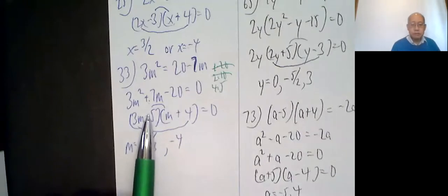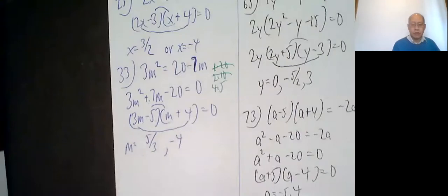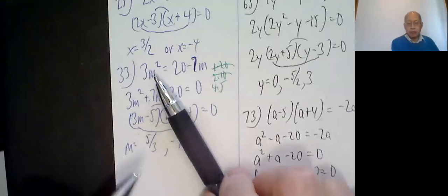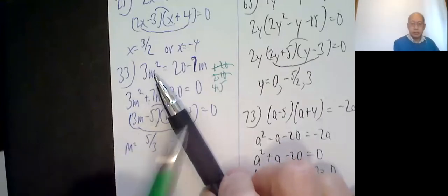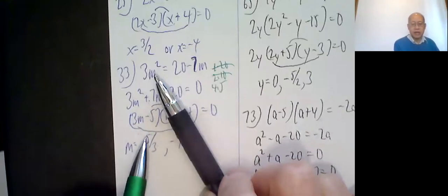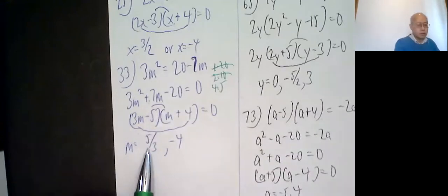So set this equal to 0, you get 5 thirds. Set this equal to 0, negative 4. And yes, you probably want to get to the stage where you can do even this in your head, because your future math instructors, if you have to take more math beyond our course, they might want you to do this quickly. 3m minus 5 equals 0, you would add the 5 and then divide by 3, means 5 is on top, 3 is on the bottom. If you want to go slower, you can go slower.